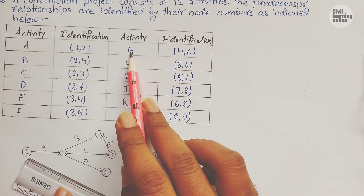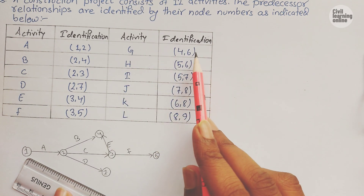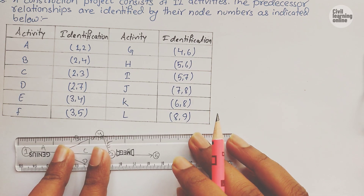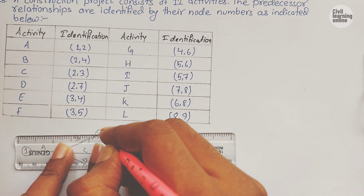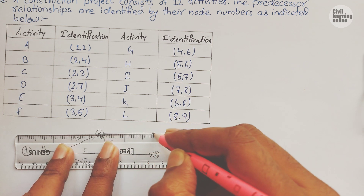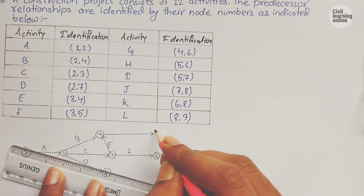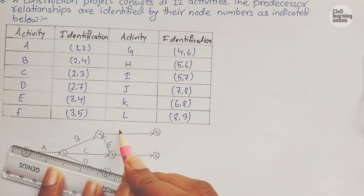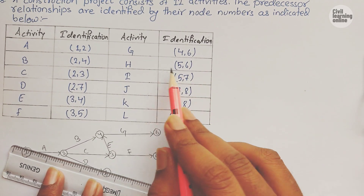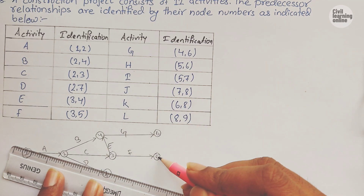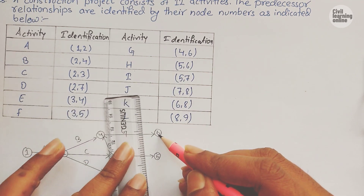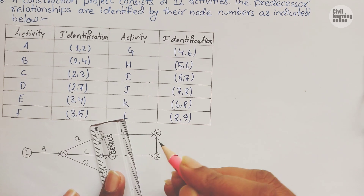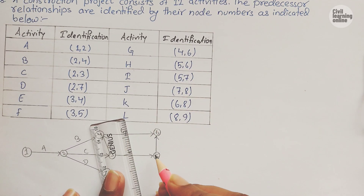Activity G starts from node 4 and terminates at node 6. We draw a new node 6 and the activity from 4 to 6 is activity G. We also have activity H which starts from node 5 and terminates at node 6, so draw it here — 5 to 6 is activity H.